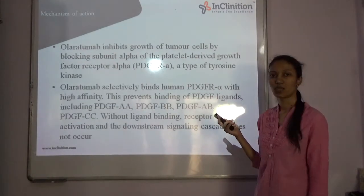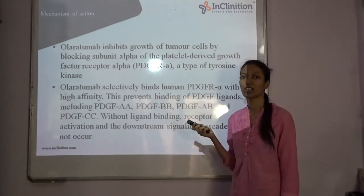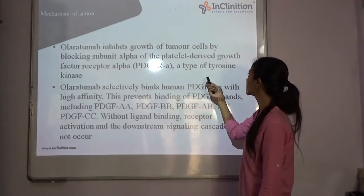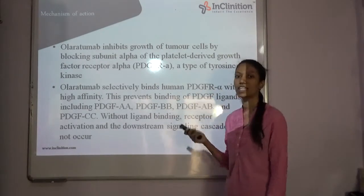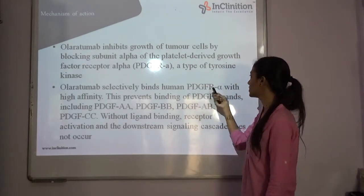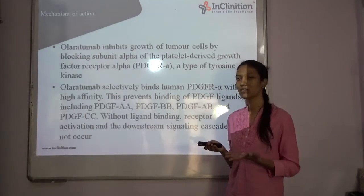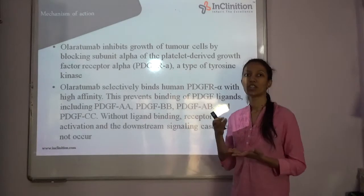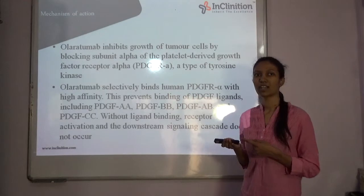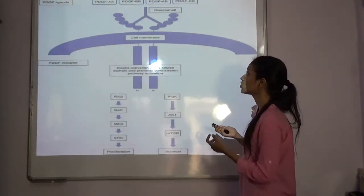Now the mechanism of action for Olaratumab: it inhibits the growth of tumor cells by blocking PDGFR-alpha. PDGFR-alpha is a type of tyrosine kinase, so indirectly it is a tyrosine kinase inhibitor. Olaratumab selectively binds to PDGFR-alpha with high affinity, so instead of the ligand binding, Olaratumab binds with PDGFR-alpha and hence the binding is inhibited and further tumor growth is inhibited.